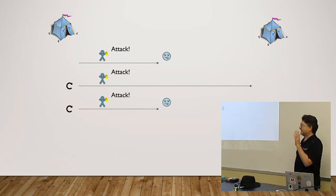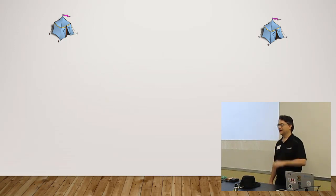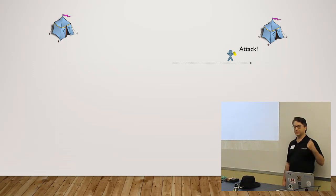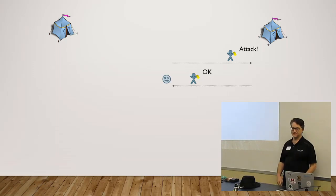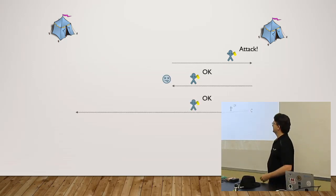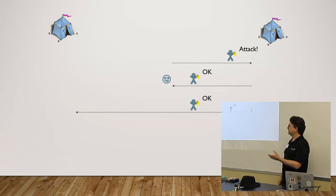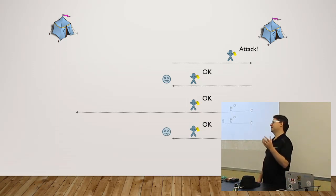We clearly cannot attack based just on that protocol. Let's try another protocol: when the general on the east receives an attack message, he sends a response — he says 'OK.' This way, the general on the west will know the response made it through. But that OK message might be lost, in which case the west general sends another attack, and the east general responds with another OK. But the general on the east doesn't know that his OK went through, so he can't know that the west general will attack.